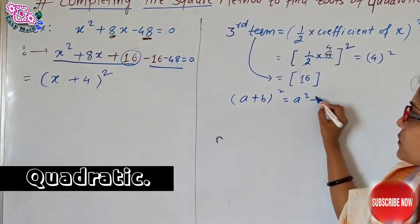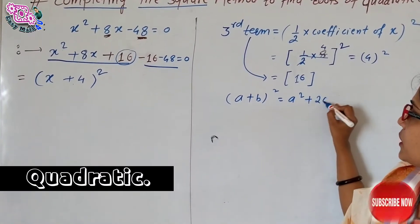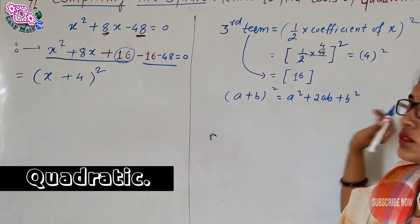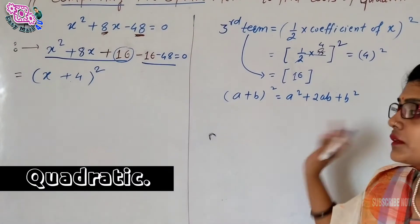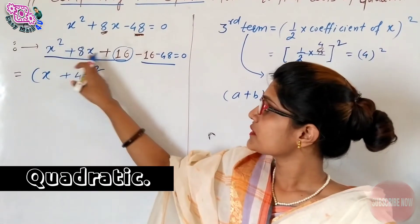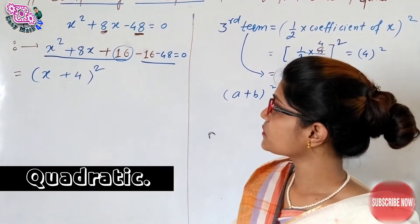You can verify this using the identity (a + b)² equals a² plus 2ab plus b². Expanding (x + 4)² gives x squared plus 8x plus 16, which confirms our perfect square.